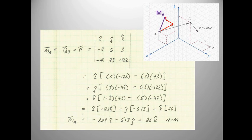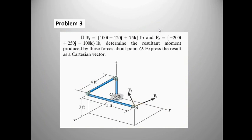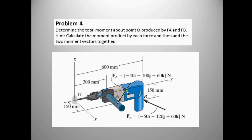For Problem 3, you have two force vectors that are coincident at point A. You can add those two together vectorially to get a resultant, then calculate R from point O to point A crossed with that resultant, and that gives you the moment about point O.